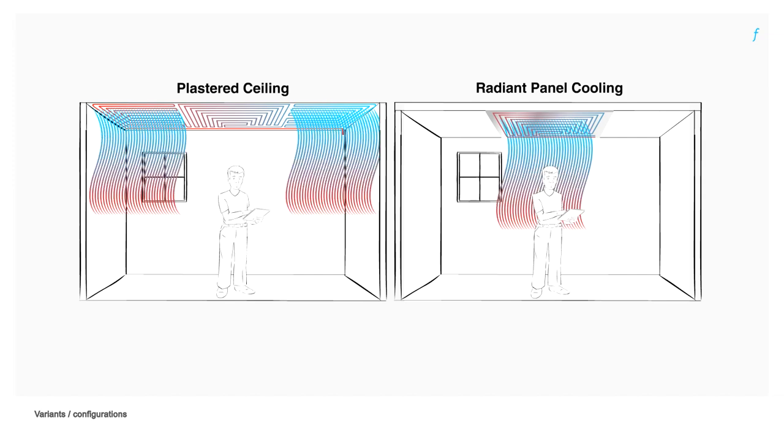Radiant ceiling cooling: Installed directly below a structural ceiling, panels with embedded pipes or pipes attached to the ceiling and covered with plaster.